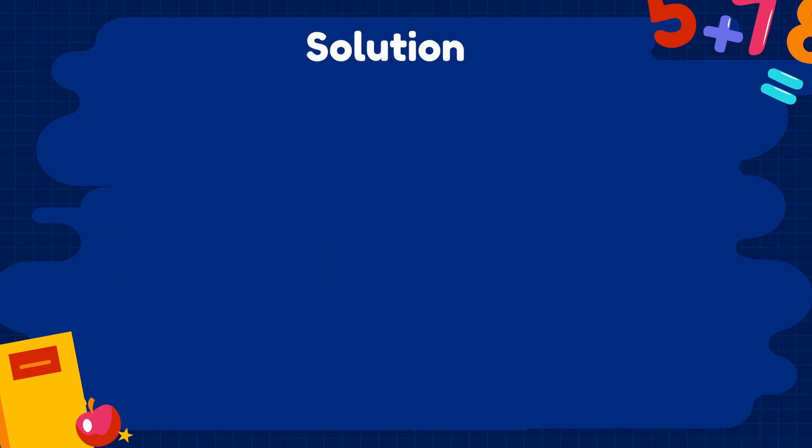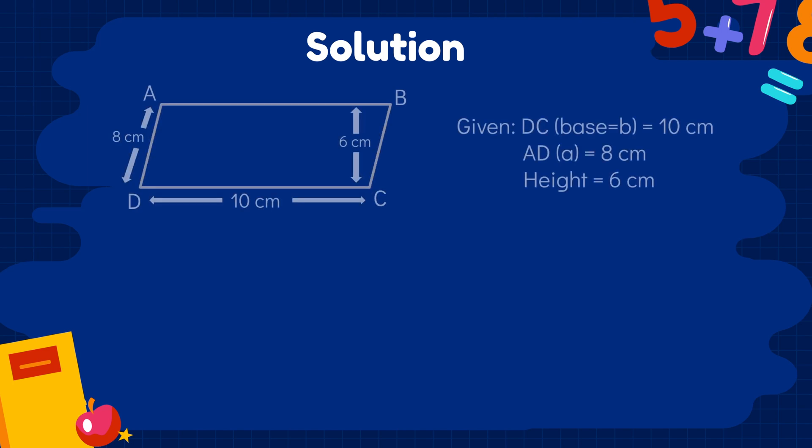Let's see the solution. There are several things given to us in the question. DC which is given equal to 10 cm is the base. AD is given as 8 cm and the height is 6 cm. In the first part, we have to find the area. So, we will multiply the base by the height. 10 x 6 gives us 60 cm².